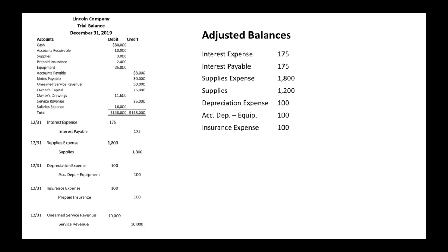Prepaid insurance: we had $2,400, and we credited that account for $100 in our fourth adjusting entry, so it now only has $2,300 in that account. Unearned service revenue: we had $50,000 worth, and then we debited that liability for $10,000, so we only have $40,000 now. And service revenue: we had $35,000 in our trial balance, and we added an additional $10,000, so we have $45,000 in service revenue.